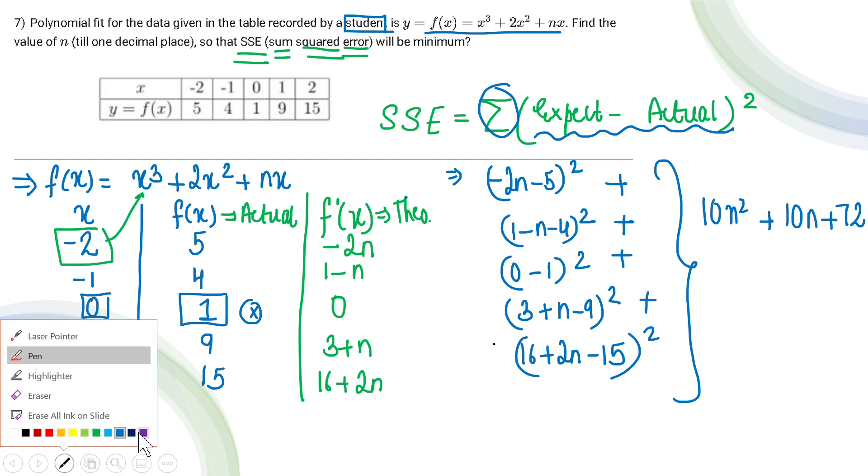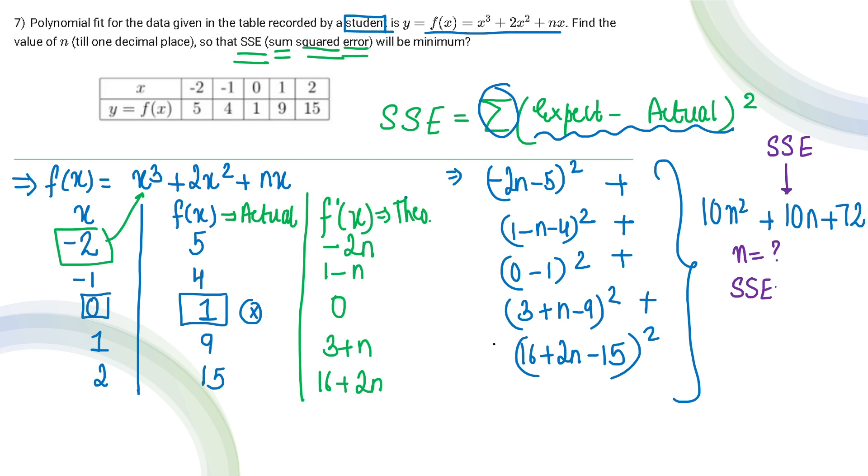Now we have to calculate the value that will make SSE minimum. We have to find that value of n for which SSE will be minimum. So differentiate and set equal to 0: 10(2n) + 10 + 0 = 0. Therefore, 20n + 10 = 0, so n = -1/2 or -0.5.